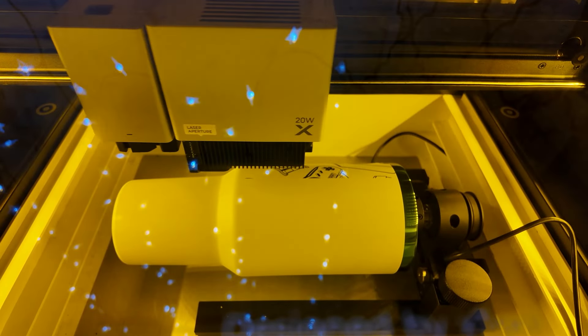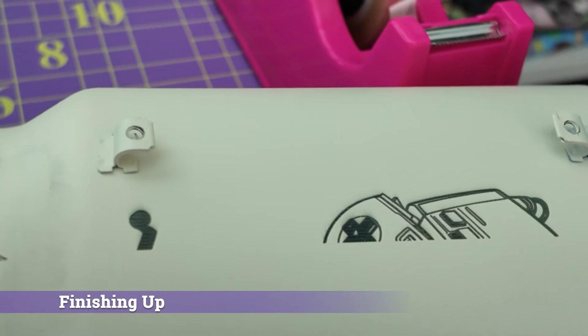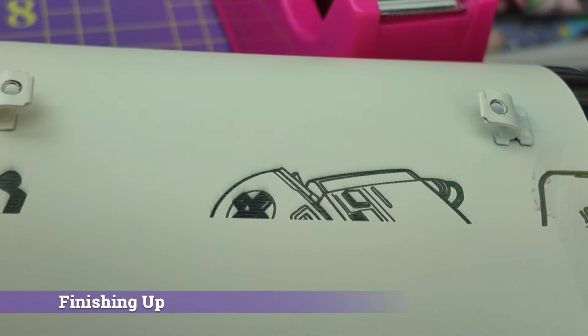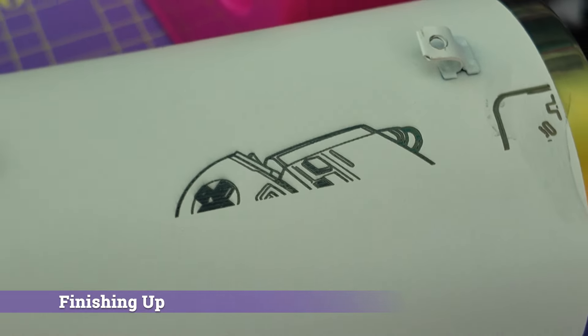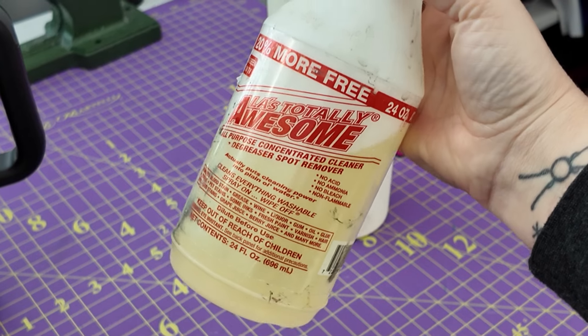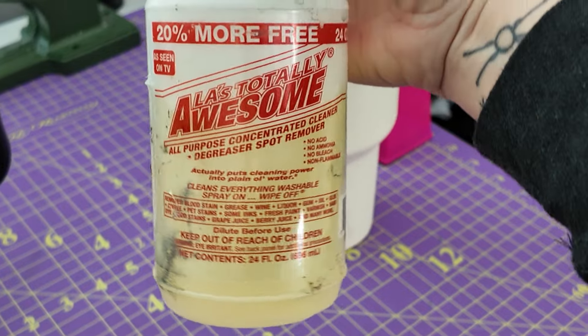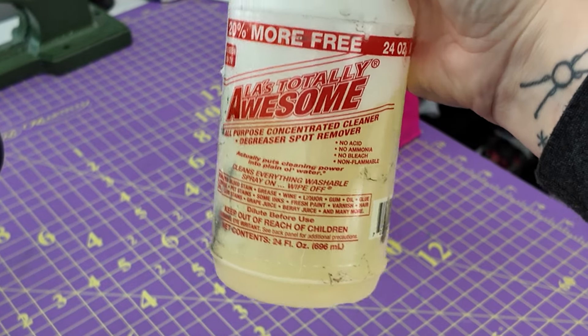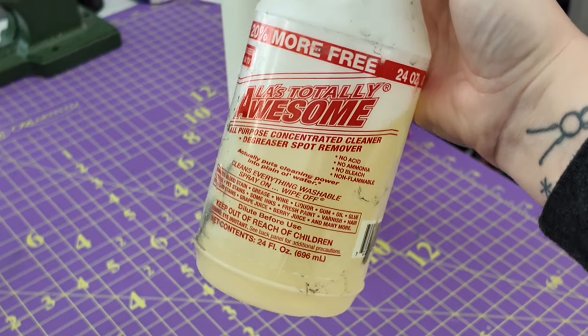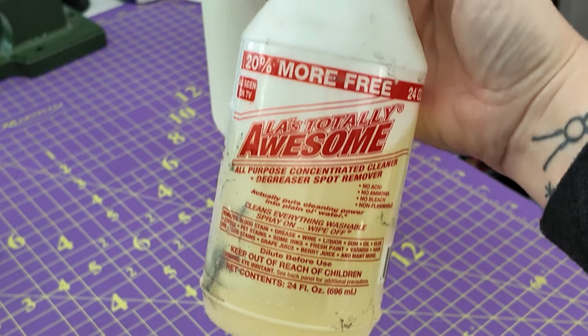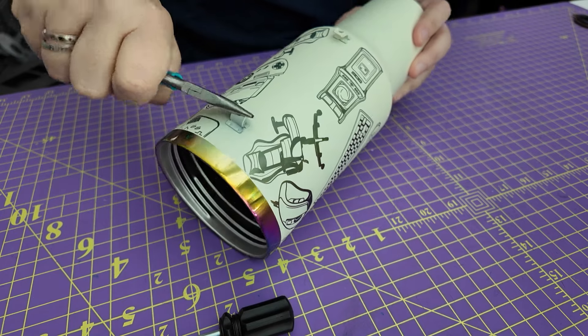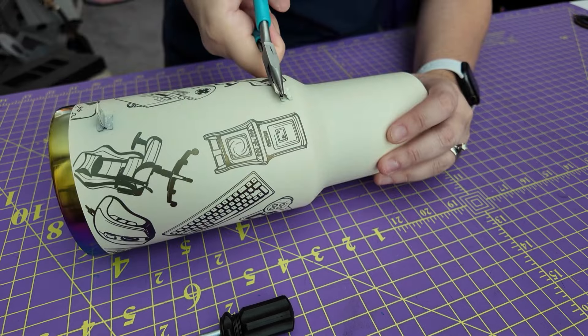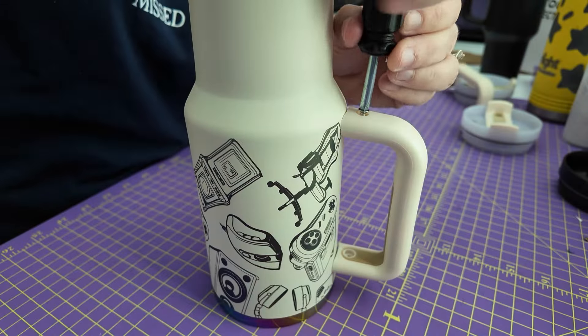When the engraving is complete, you may find that the lasered areas are dark and full of soot. That's completely normal. I strongly suggest using a degreaser like LA's Totally Awesome with the Mr. Clean Magic Eraser to clean the surface. It's a lot more efficient than just water and dish soap. After it's all cleaned up, you can use your pliers to put the brackets back into their original positions and screw on the handle.